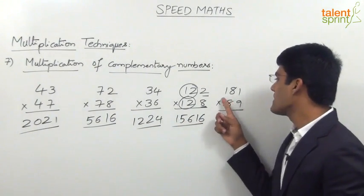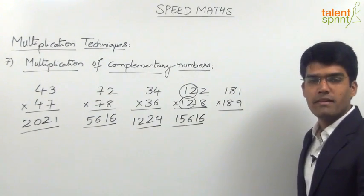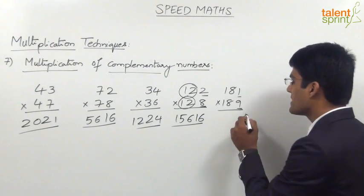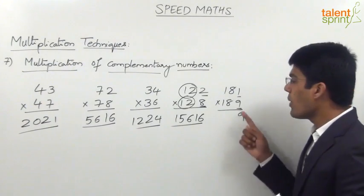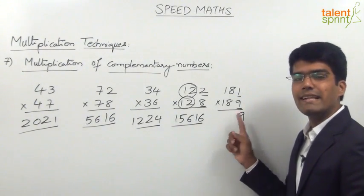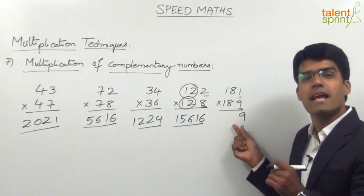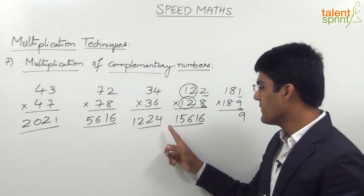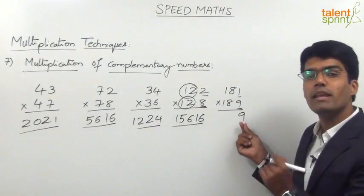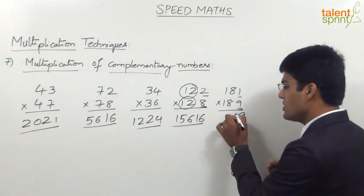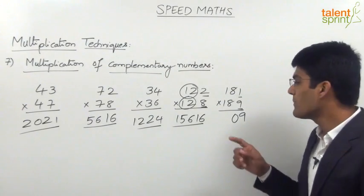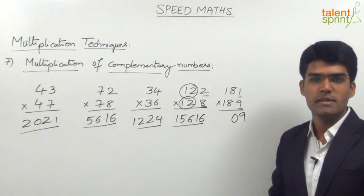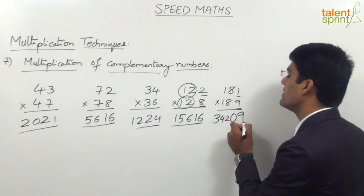In the last case, we have 181 and 189, which are complementary numbers. So the first step is 1 into 9, which is 9. But remember, here 1 into 9 is 9, but we cannot write 9 directly in the answer. Why? Because in the first step, we always have to take a two-digit number — as seen in all previous cases, the first result was 21, 16, 24, 16 and so on. So here, 9 should be taken as 09. The next step is 18 into the next integer, 18 into 19, which is 342. So the answer here is 34209.